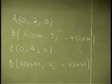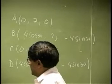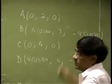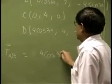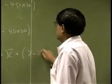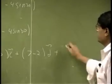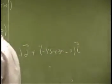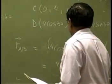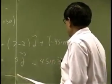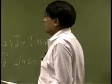That gives you the coordinate of 4 points. If I need RAB, we're going to take this, which is the tip, and subtract this. So you get 4 cosine 30 minus 0, I. Then we have 7 minus 2, that's 5 J. Then we have negative 4 sine 30 minus 0, K. That should come out to be 4 cosine 30 I, plus 5 J, minus 4 sine 30 K.